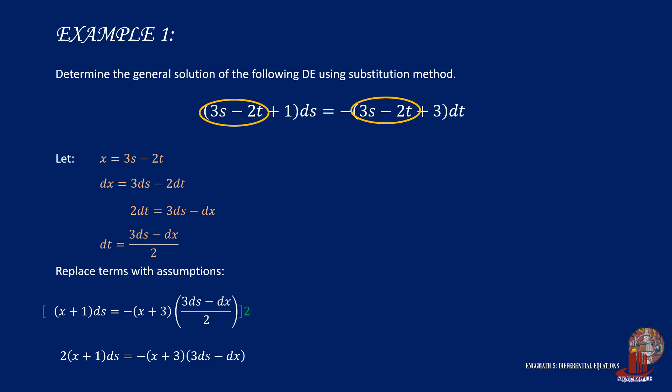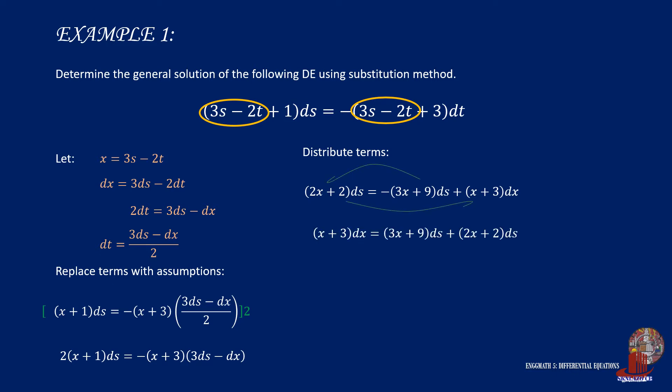From here, the derivatives are in ds and dx — one term on the left and two terms on the right side of the function. So distribute the derivatives from the terms to give 2x plus 2 times ds is equal to negative 3x plus 9 times ds plus x plus 3 times dx. At this point, we can see that the terms in the function are regrouping, so distribute terms according to the derivatives and collect similar derivatives to have x plus 3 times dx is equal to 3x plus 9 plus 2x plus 2 times ds.